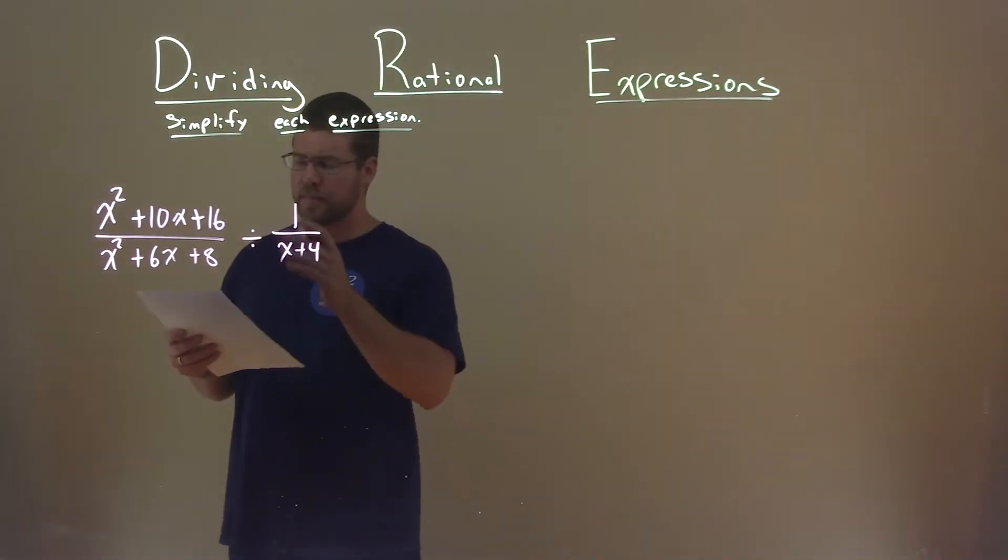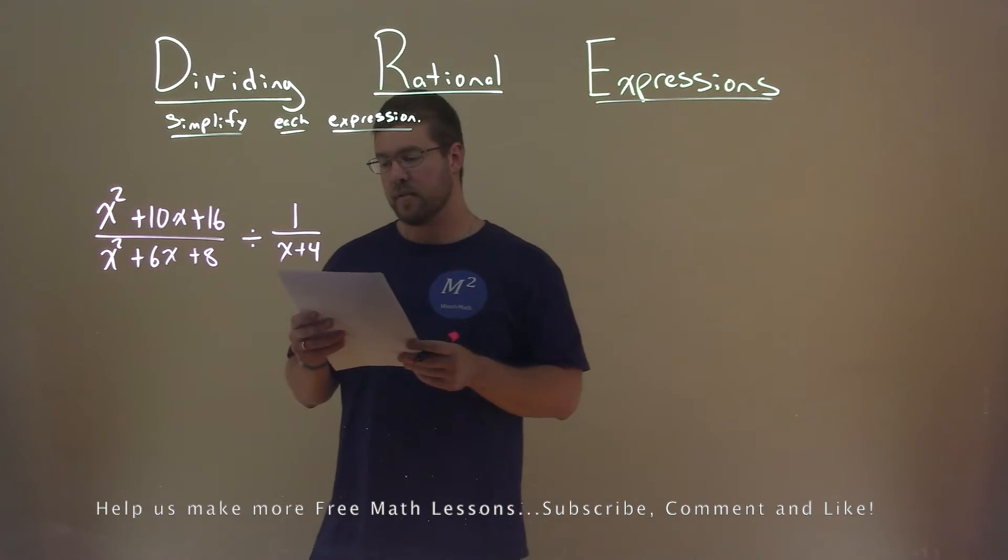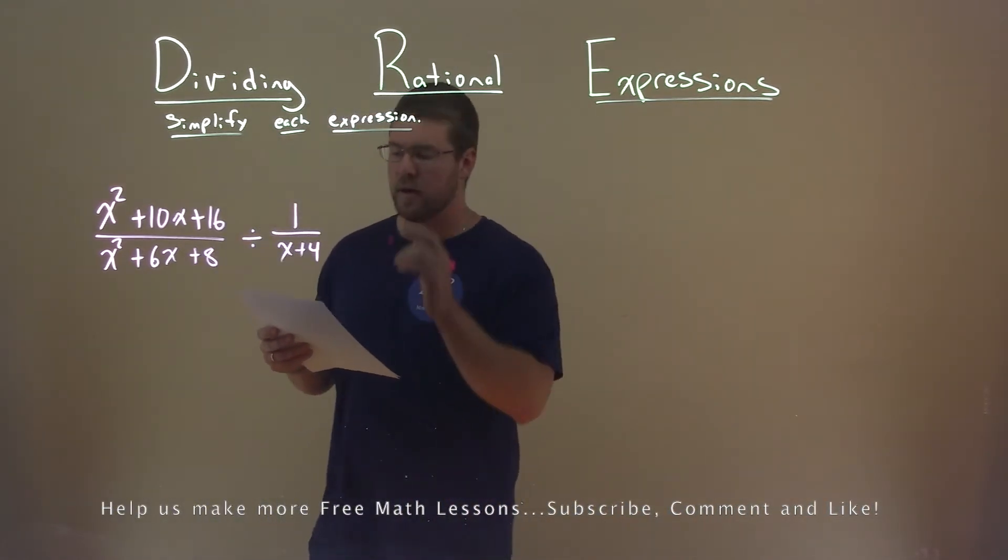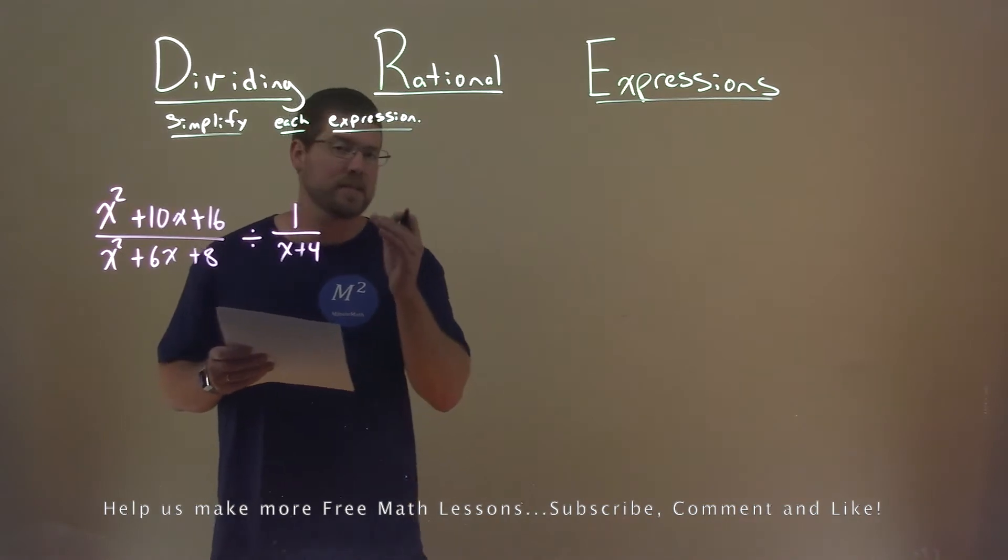We're given this problem right here: x squared plus 10x plus 16 over x squared plus 6x plus 8, divided by 1 over x plus 4, and we need to simplify this expression.